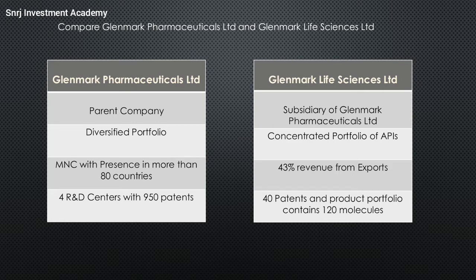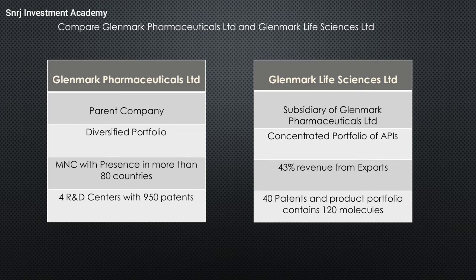Glenmark Life Sciences was part of Glenmark Pharmaceuticals — only recently the API business got separated and made into a new company, Glenmark Life Sciences Limited, which then got listed. Glenmark Pharmaceuticals is an MNC with presence in more than 80 countries and a wide variety of products. Glenmark Life Sciences focuses on the API business, with 90% of revenues coming from APIs, and 43% of revenues from exports.